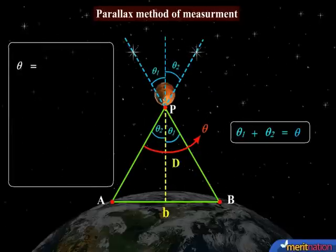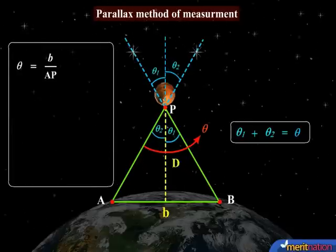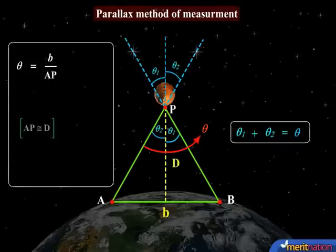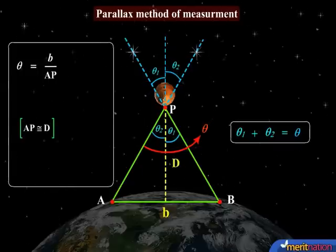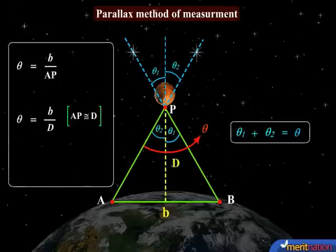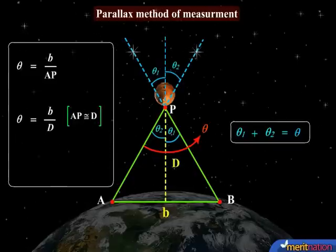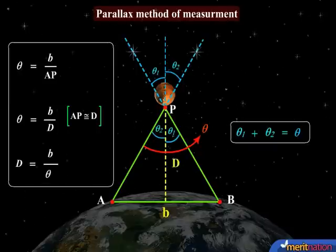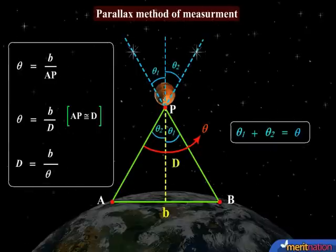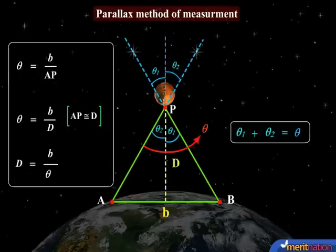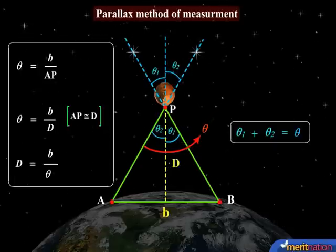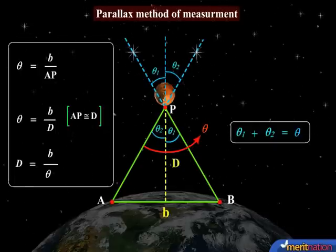Now, theta is equal to B by AP. But you see that AP is nearly equal to D. Thus, we have theta is equal to B by D. Or, we have D is equal to B by theta. Thus, using parallax, we have measured just how far away planet P is from Earth.